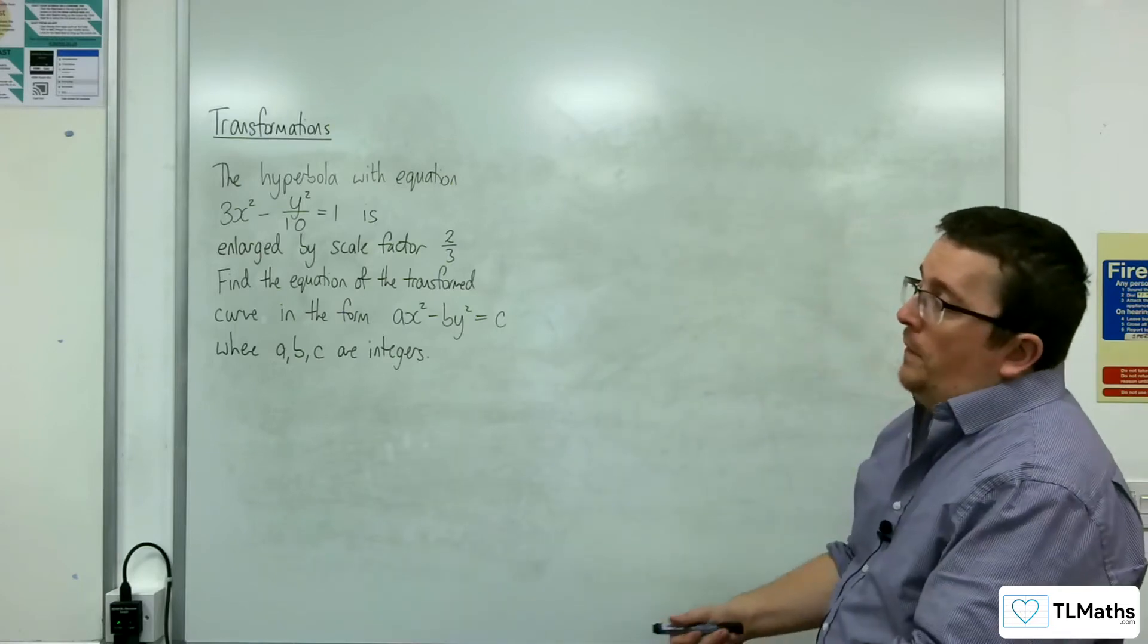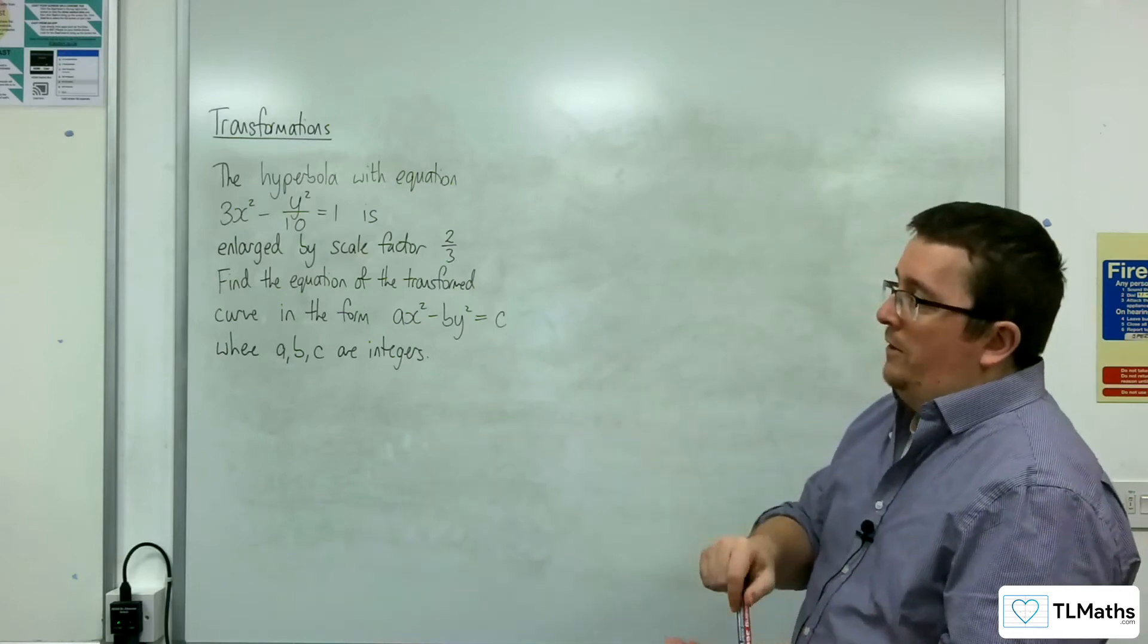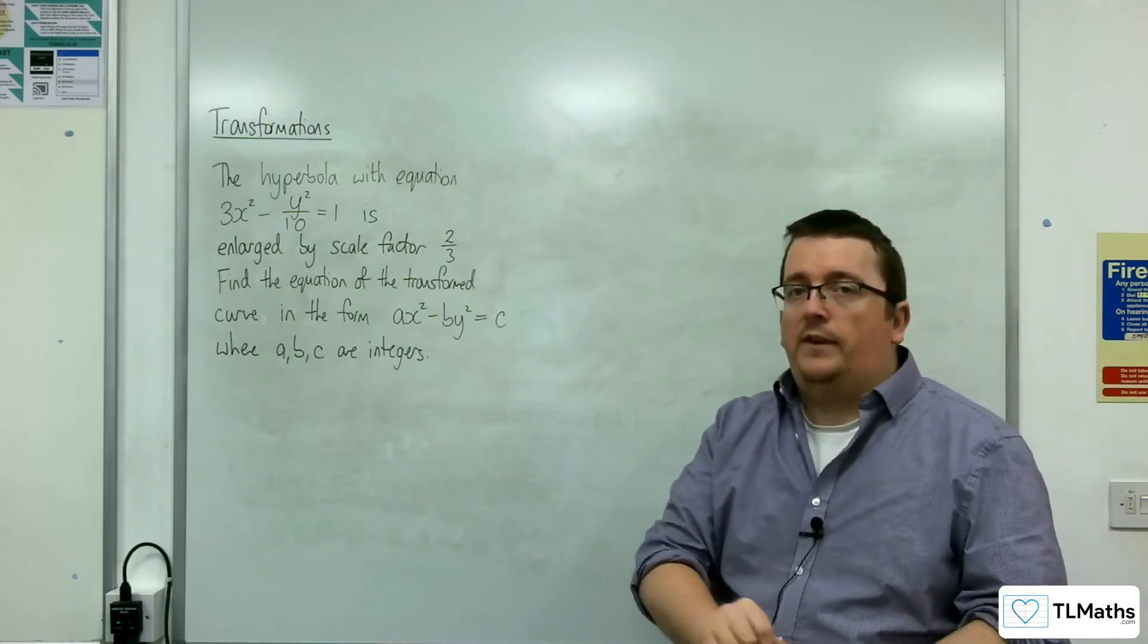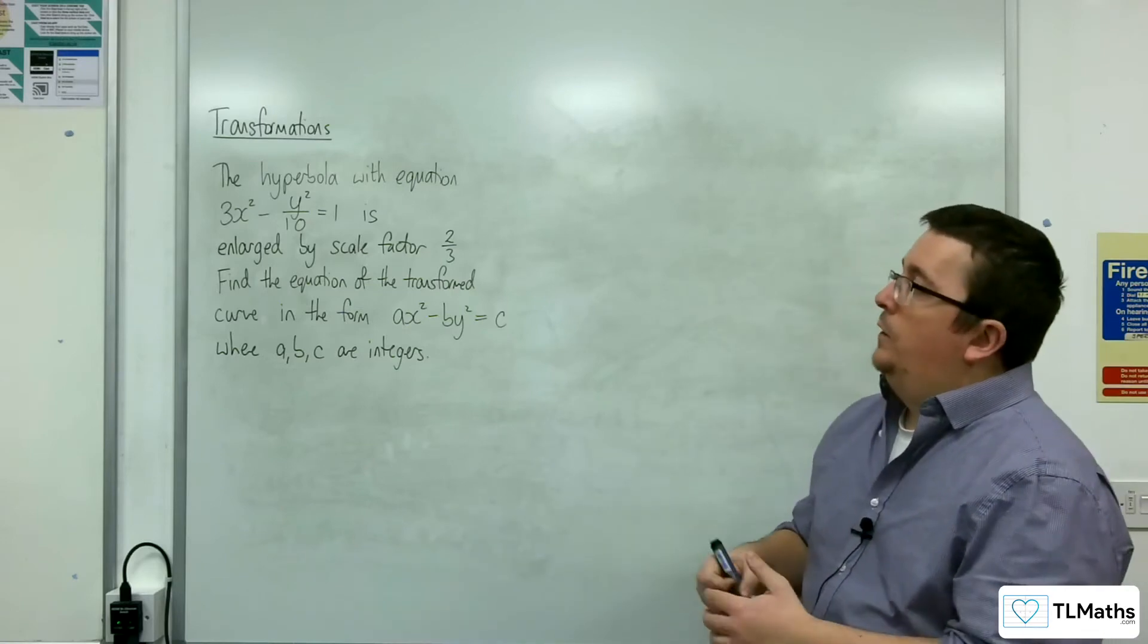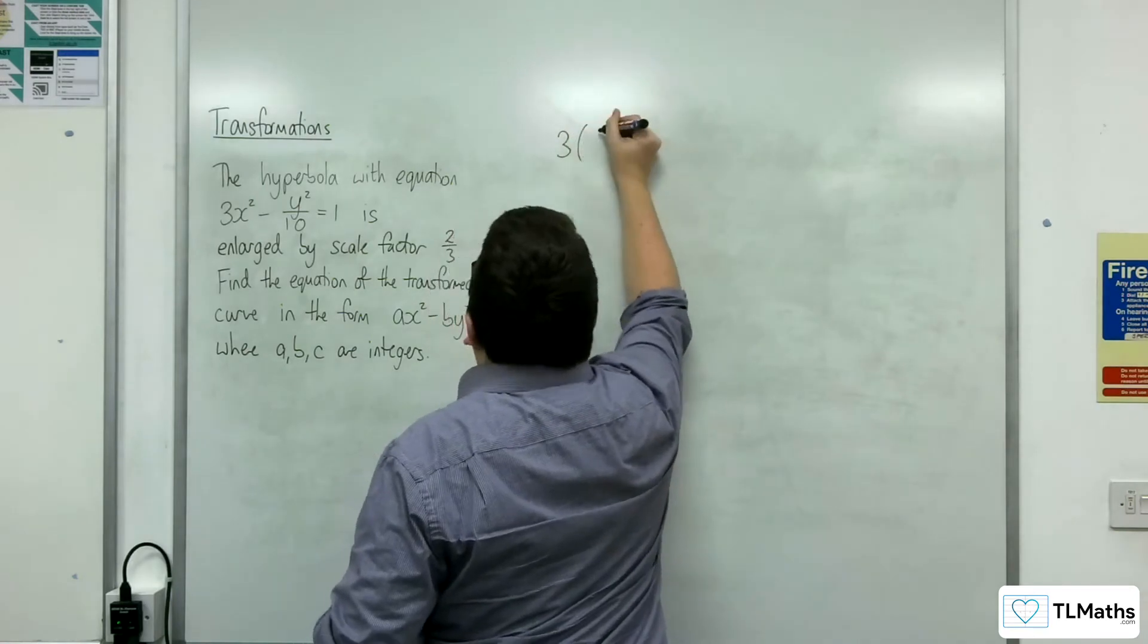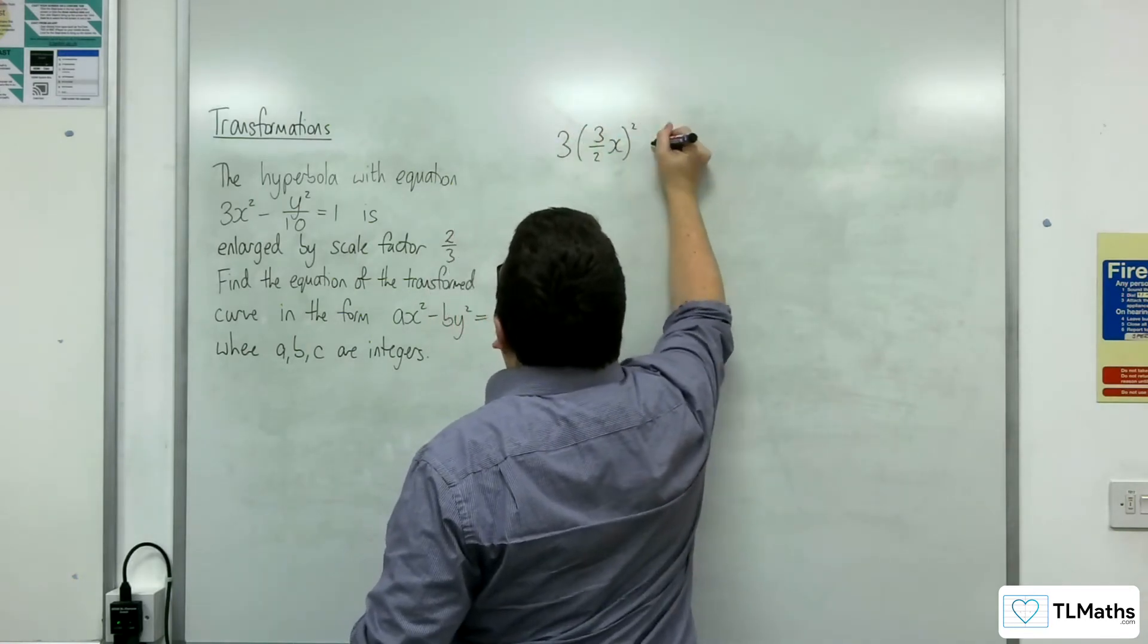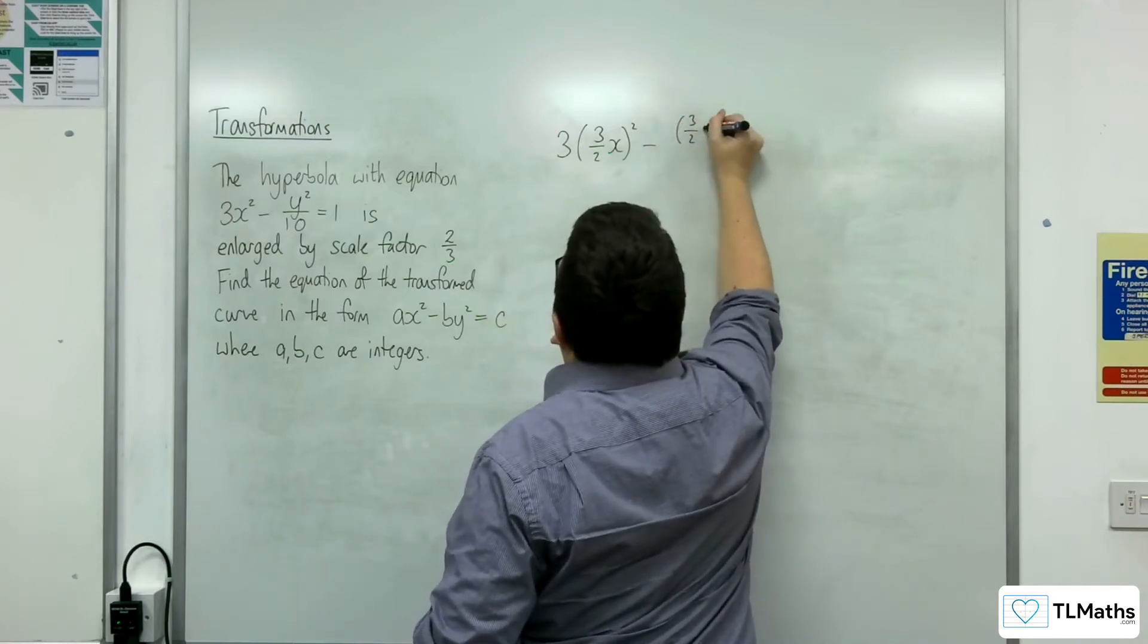So if it's enlarged by scale factor 2 thirds then that means it is stretched parallel to the x axis factor 2 thirds and a stretch parallel to the y axis factor 2 thirds. Which means I'm going to replace the x with 3 halves x and the y with 3 halves y.